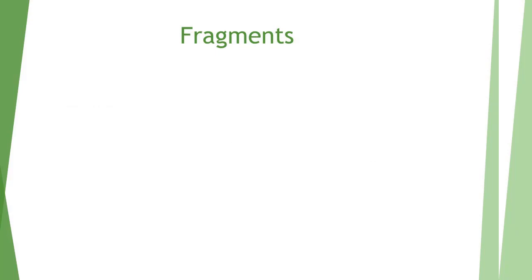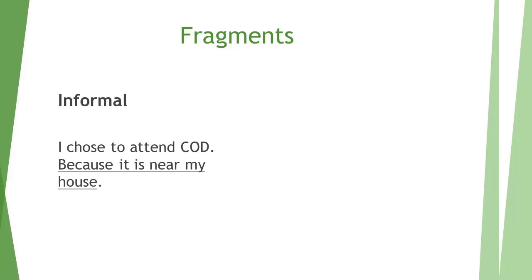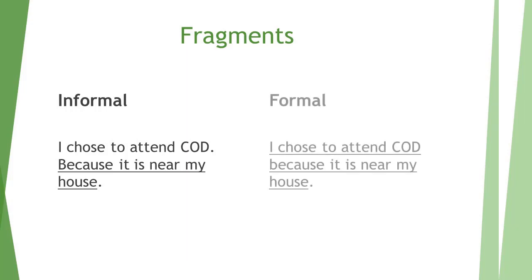In all language you should avoid fragments, but in formal language it's especially important. A fragment is a group of words missing a subject, a verb, or a complete thought. For example, 'because it is near my home' is a fragment. Rather than writing 'I chose to attend COD. Because it is near my house,' it should read 'I chose to attend COD because it is near my house' — that includes a subject, a verb, and a complete thought.